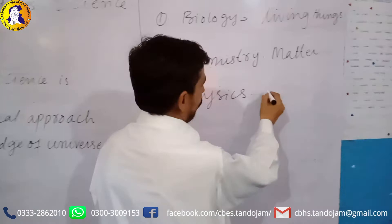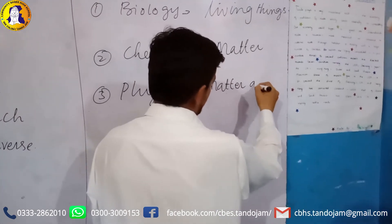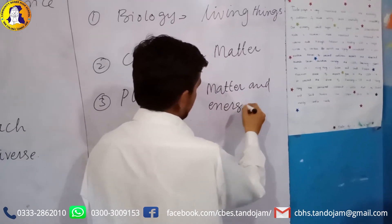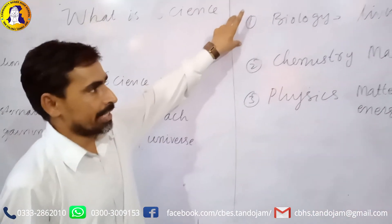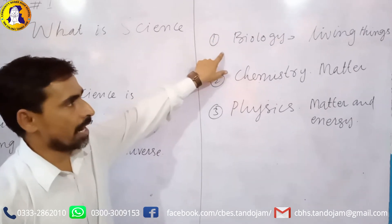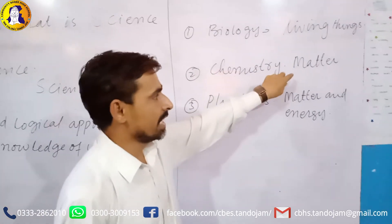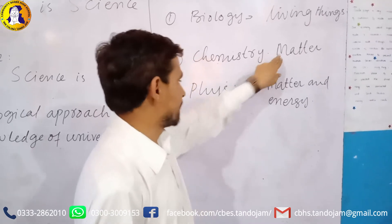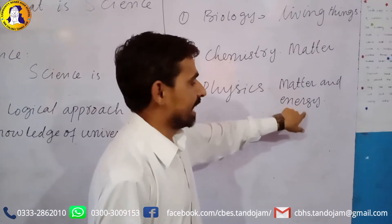The third section of physics covers matter and energy and their relationship. In our science book: the first section is biology, in which we study about living things; the second is chemistry, in which we study about matter — its structure, properties, and the composition of atoms; and the third is physics, in which we study about the matter and energy relationship.